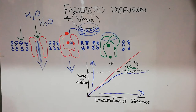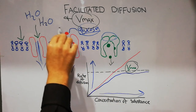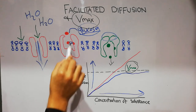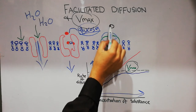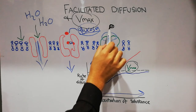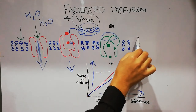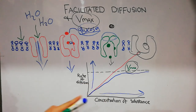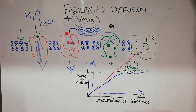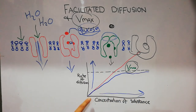VMAX is the maximum rate of diffusion of a substance through facilitated diffusion. For example, when one glucose molecule gets attached and the protein opens toward the inside to release it, if a second glucose molecule is waiting outside, it must remain outside until the channel opens again and the new binding site becomes available. The time it takes for the glucose molecule to attach and the channel to reset determines the VMAX, or maximum rate of diffusion.